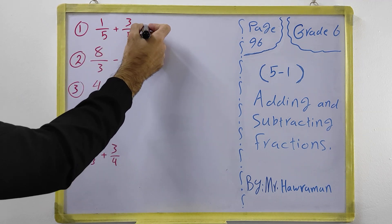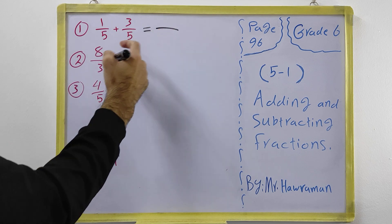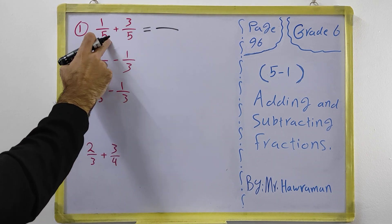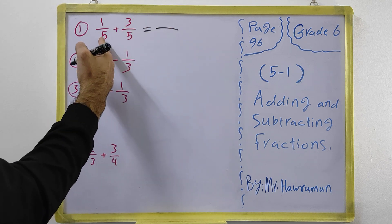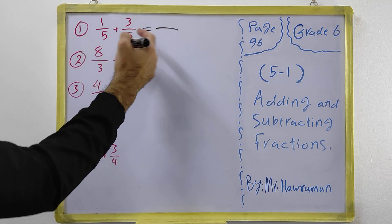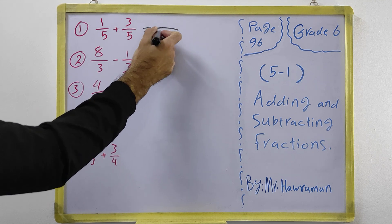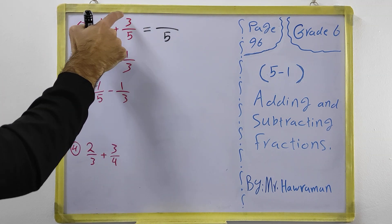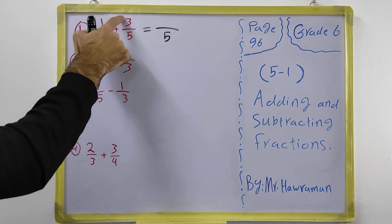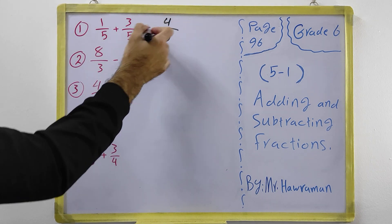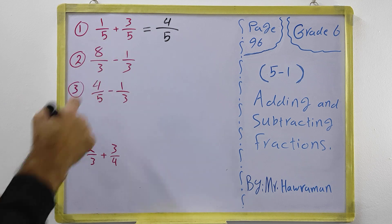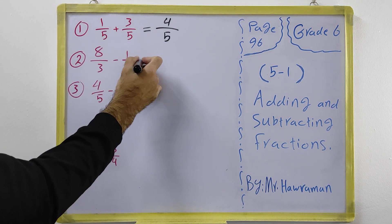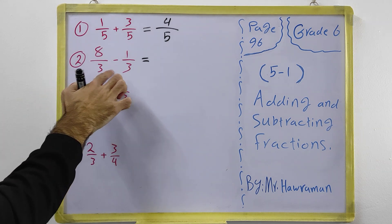When the denominators are the same, we never add or subtract the denominators — we write the same denominator as it is. We only add or subtract the numerators. For example, 1/5 plus 3/5 equals 4/5.